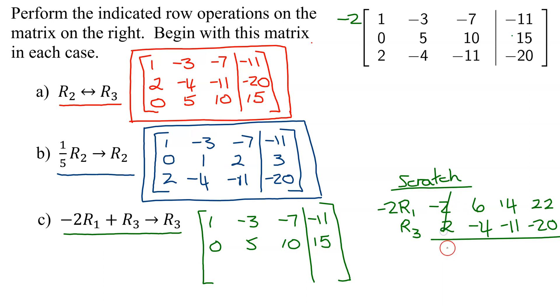Negative 2 and 2 are 0. 6 added to negative 4 is 2. 14 added to negative 11 is 3. 22 added to negative 20 is 2.